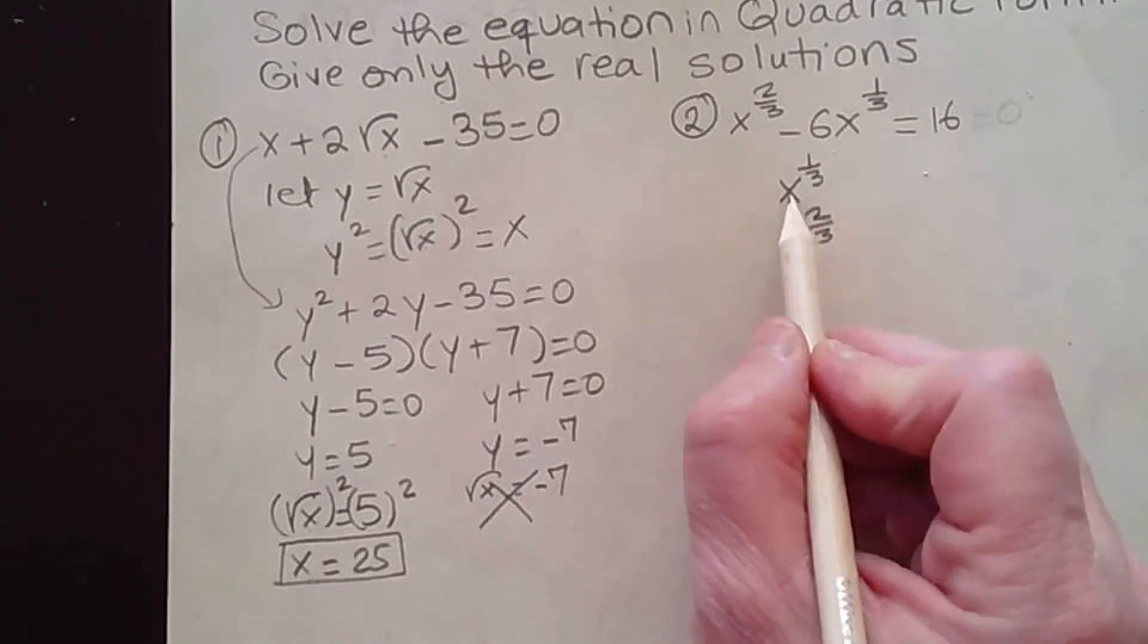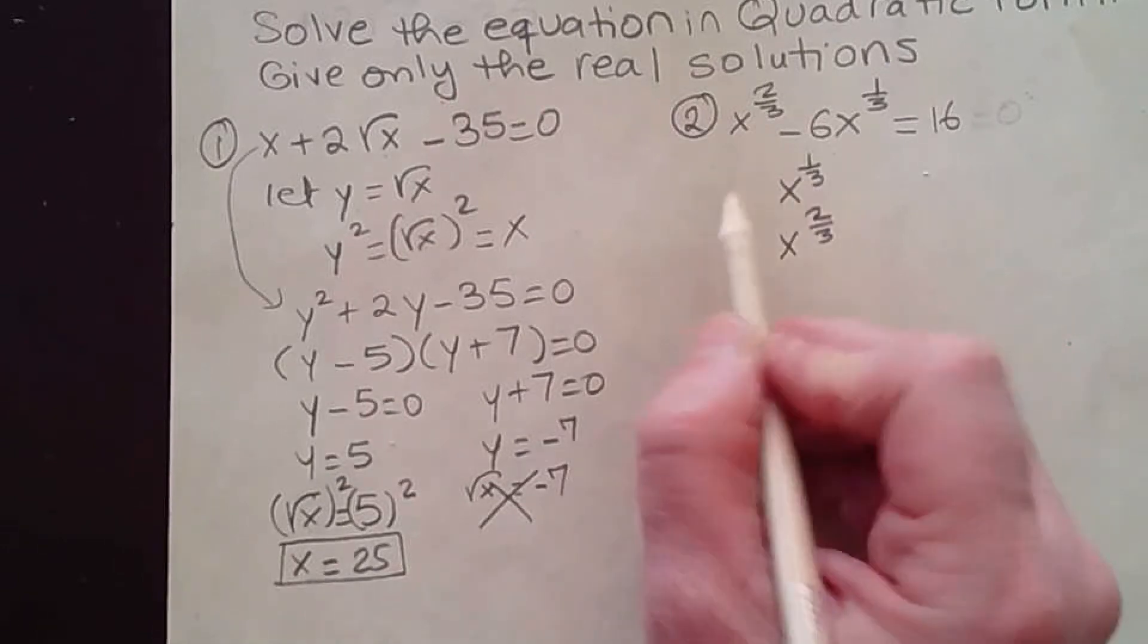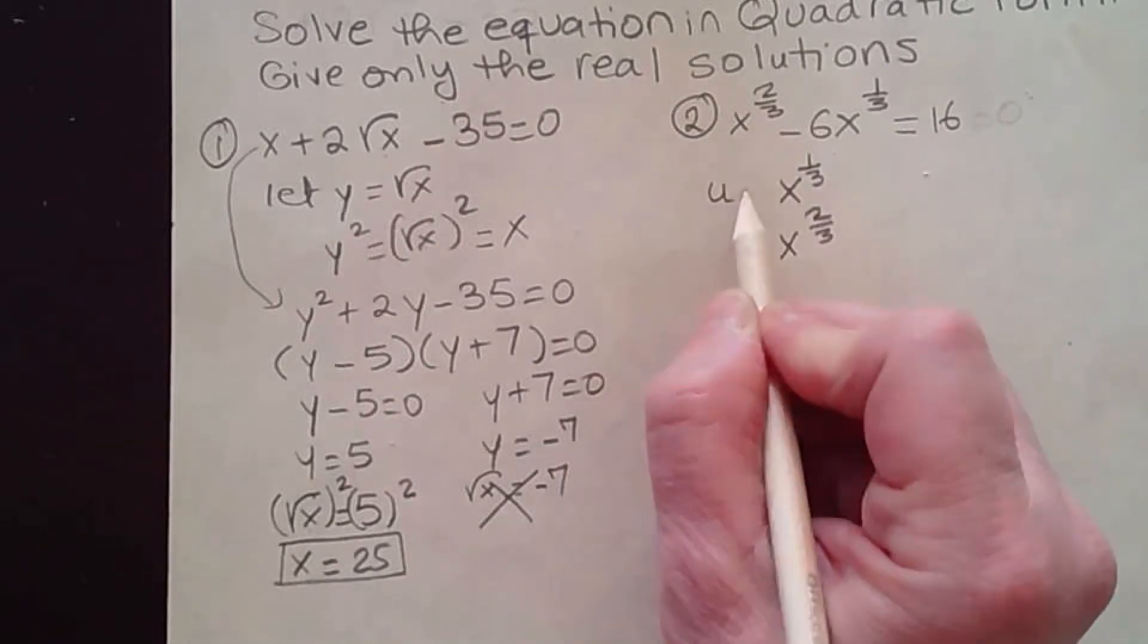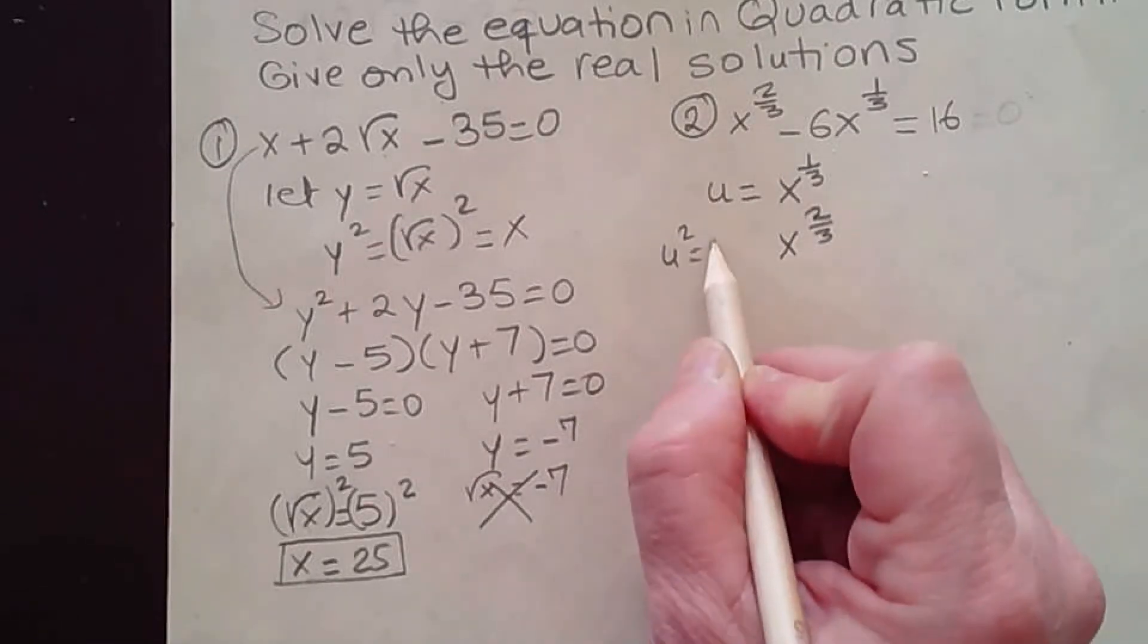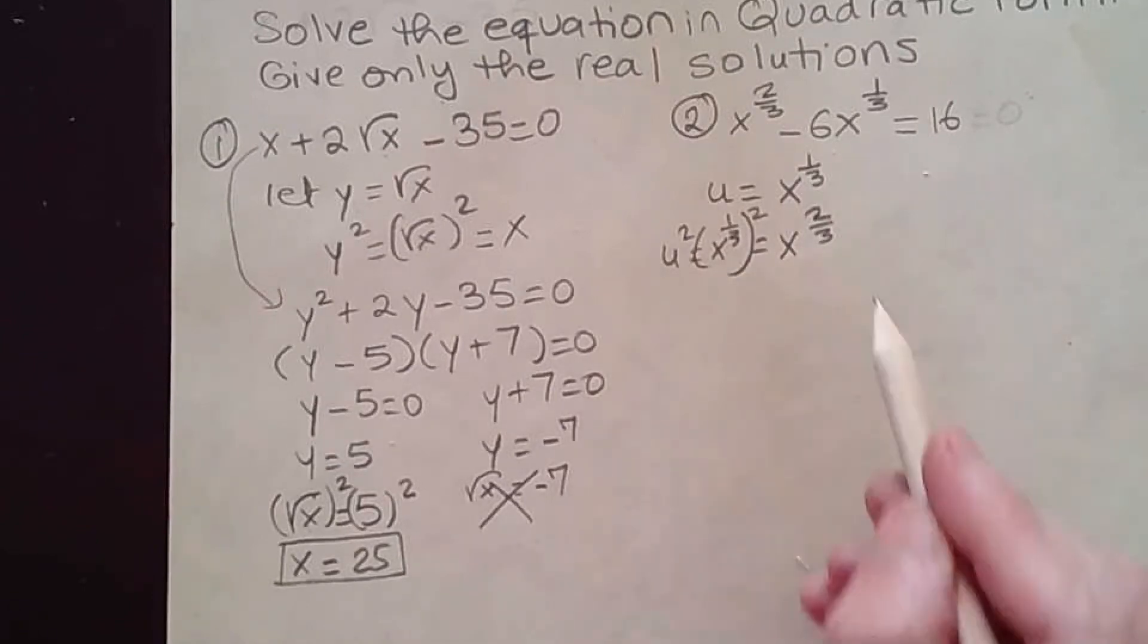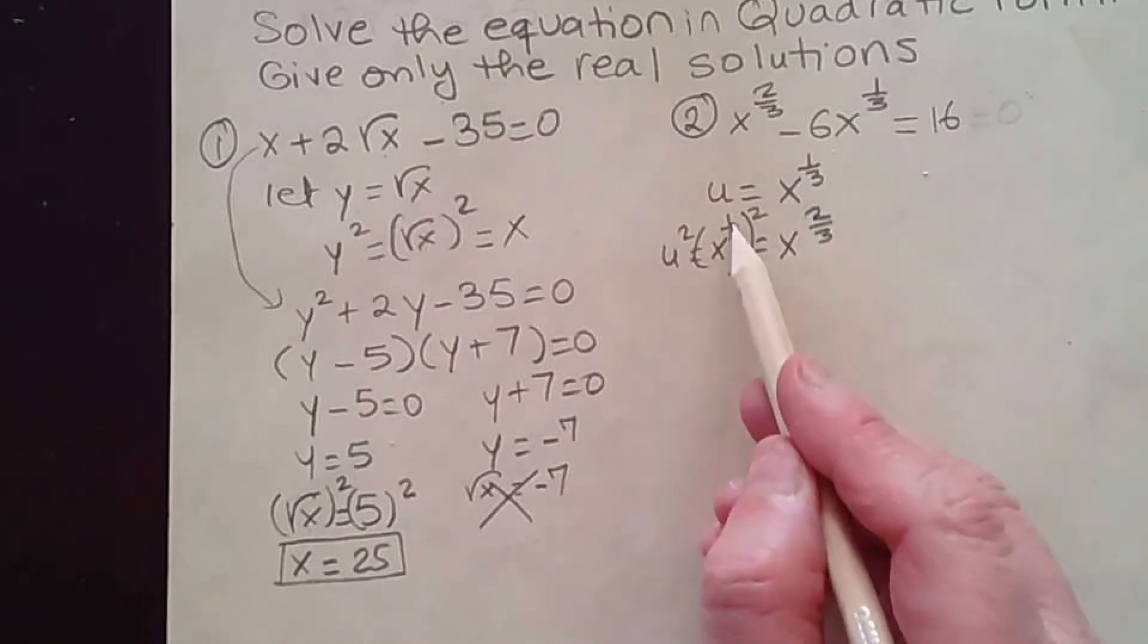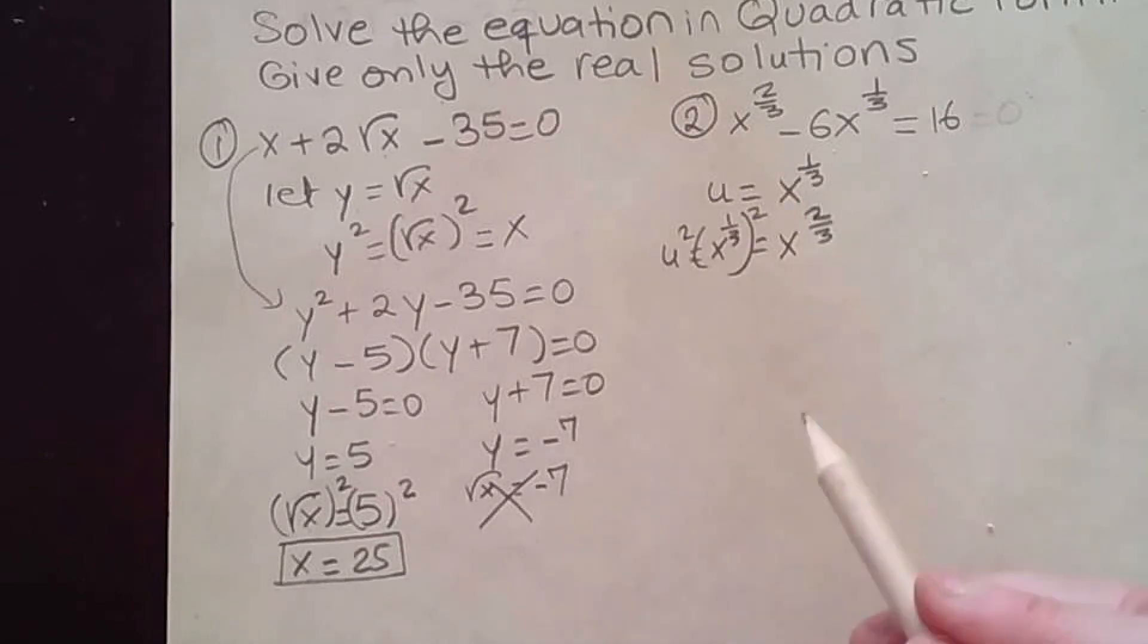So in other words, if I let this be a variable, if I'm just going to call it u, then u squared would be x to the 1/3 squared, which is equal to x to the 2/3. 2 times 1 is 2 divided by 3.